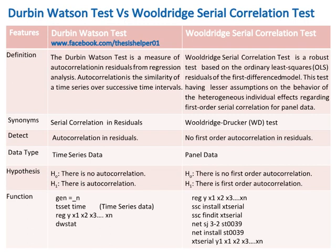The null hypothesis of the Durbin-Watson test is that there is no autocorrelation, and the alternative hypothesis is that there is autocorrelation. The null hypothesis of the Wooldridge Serial Correlation test is that there is no first-order autocorrelation.